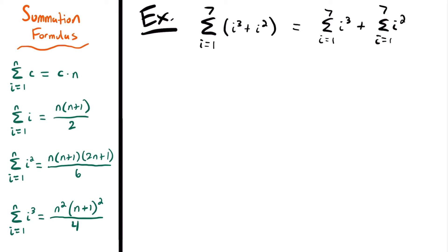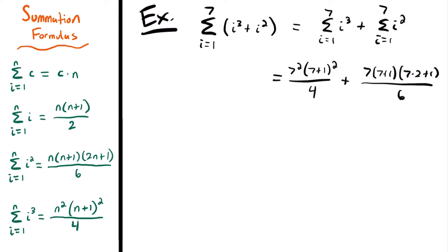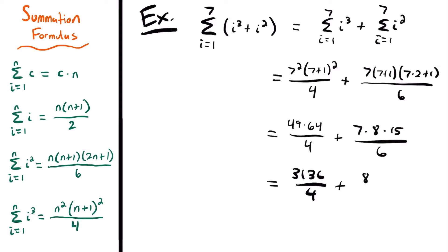Looking at our summation formulas, we have formulas for i squared and i cubed, and in both cases n equals 7. For i cubed: 7 squared times (7 plus 1) squared divided by 4, which is 49 times 64 divided by 4. For i squared: 7 times 8 times 15 divided by 6. Simplifying: 3,136 divided by 4 plus 840 divided by 6, which equals 784 plus 140, giving us 924 as the answer.